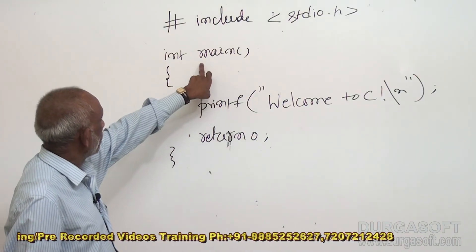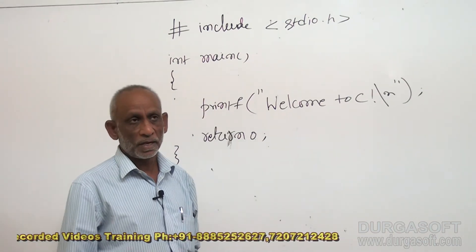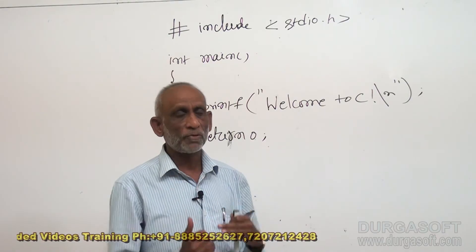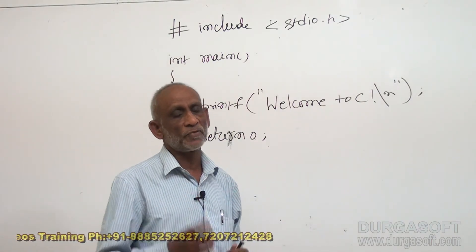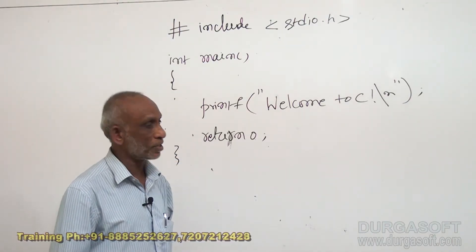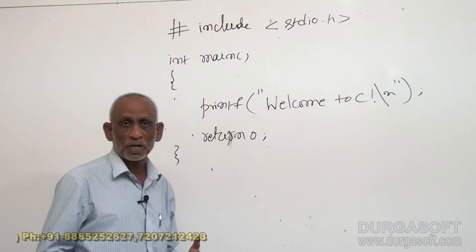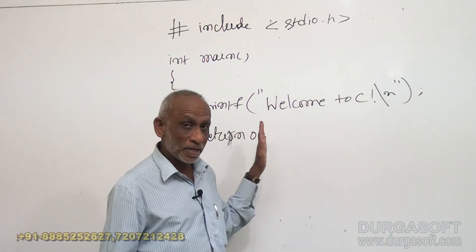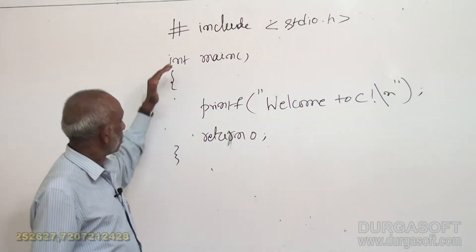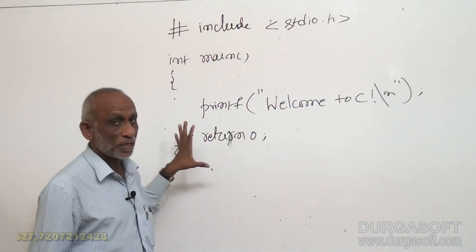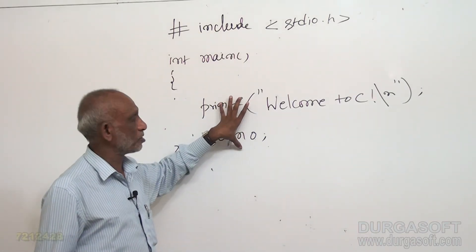Let us go to main. This main is a function. In C, a function means it is a set of C language statements which will execute a specific task - that is called a function. Here main is a function. Whatever C program we have to write, we will write inside the main function itself. So main, opening brace, closing brace - this is the function. Whatever statements we want to write, we write between these opening and closing braces.